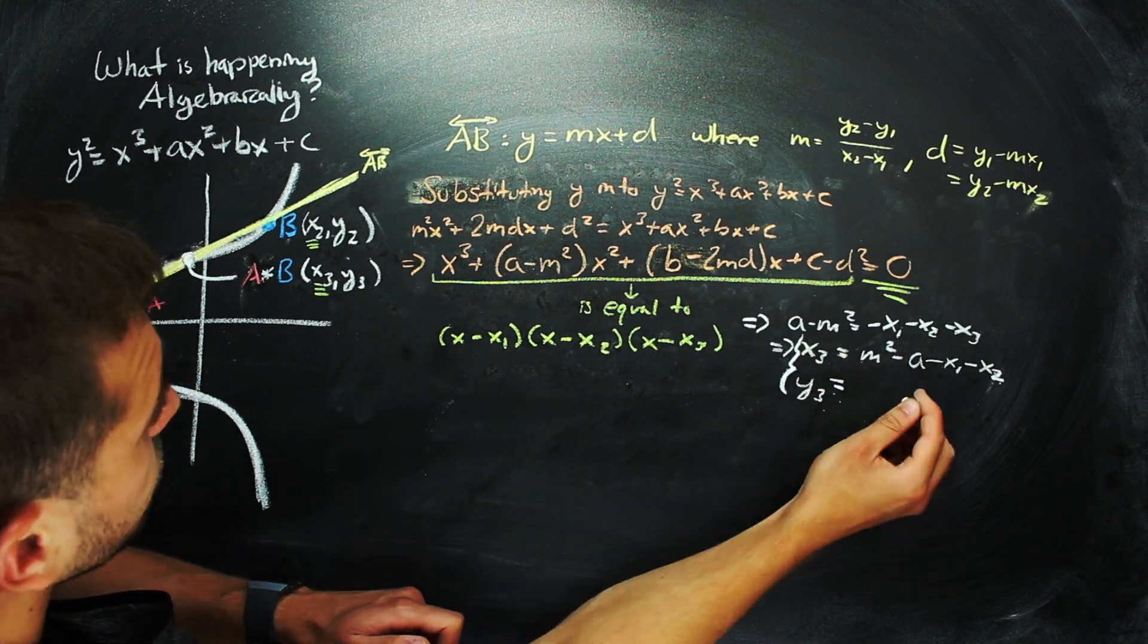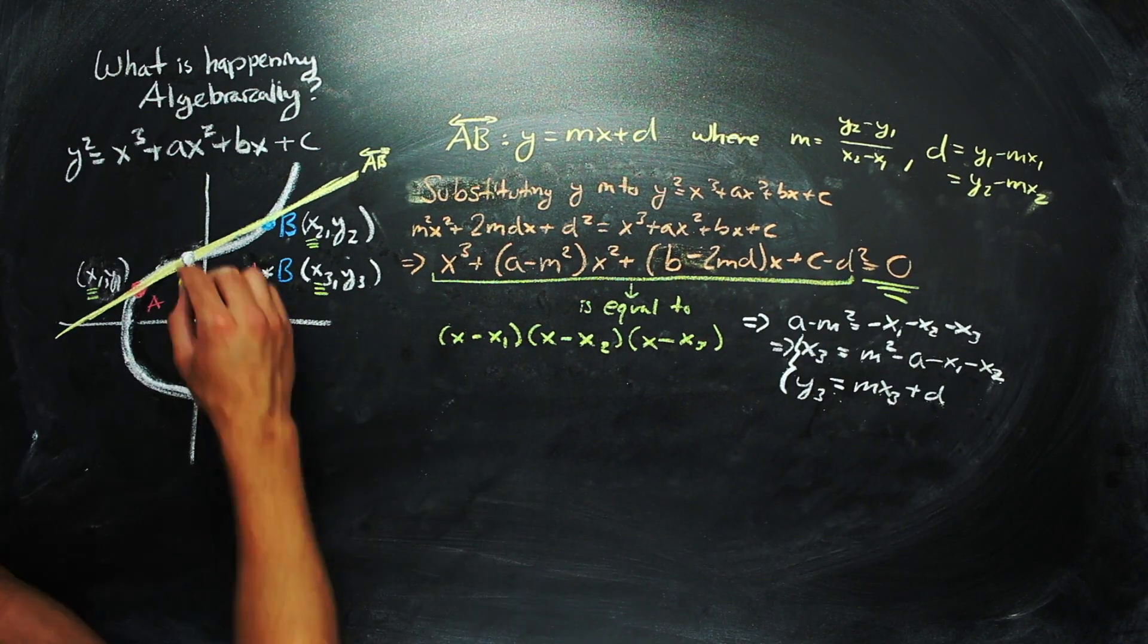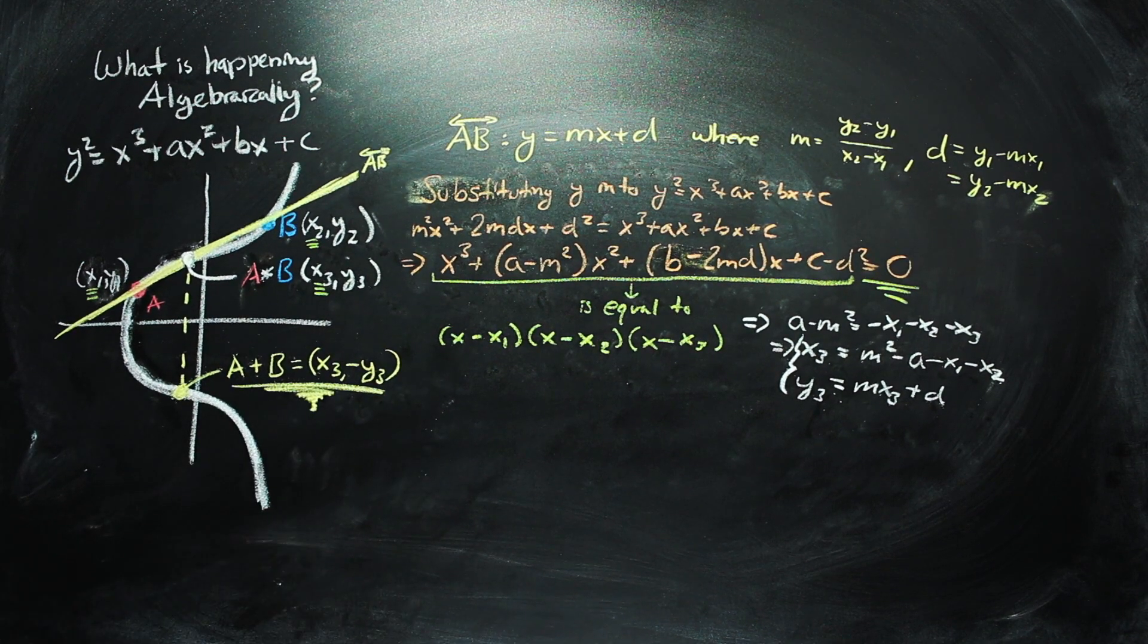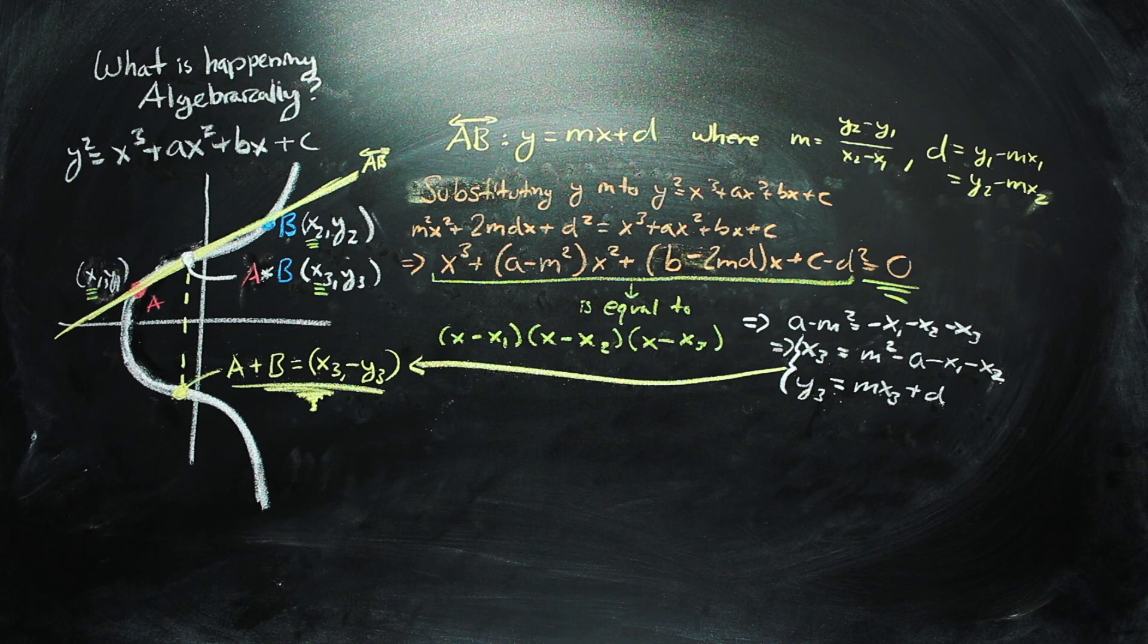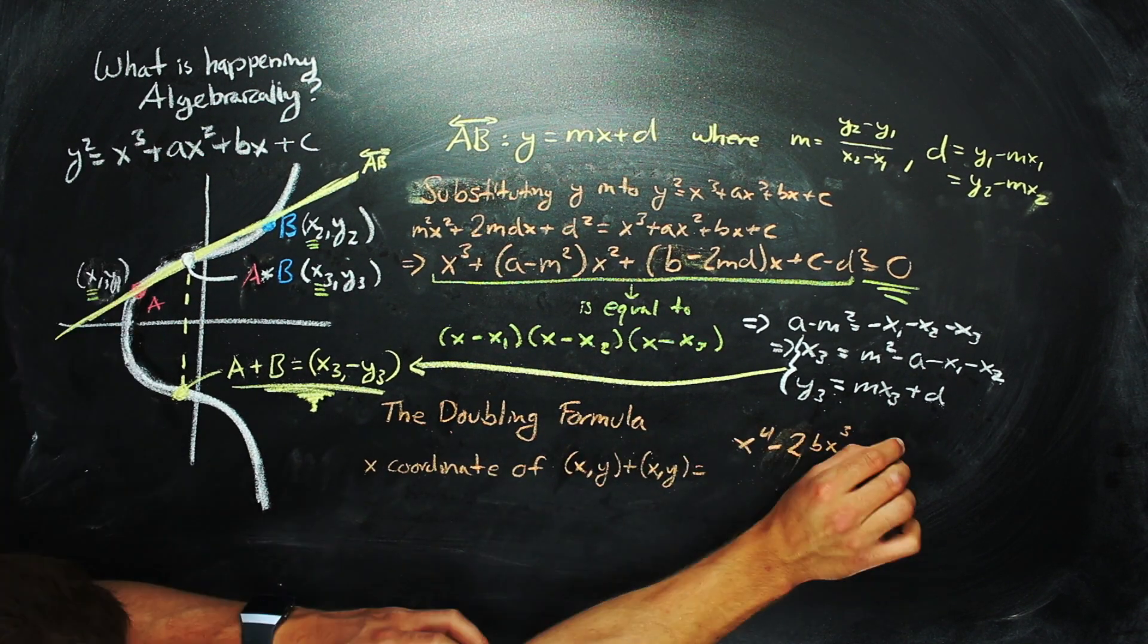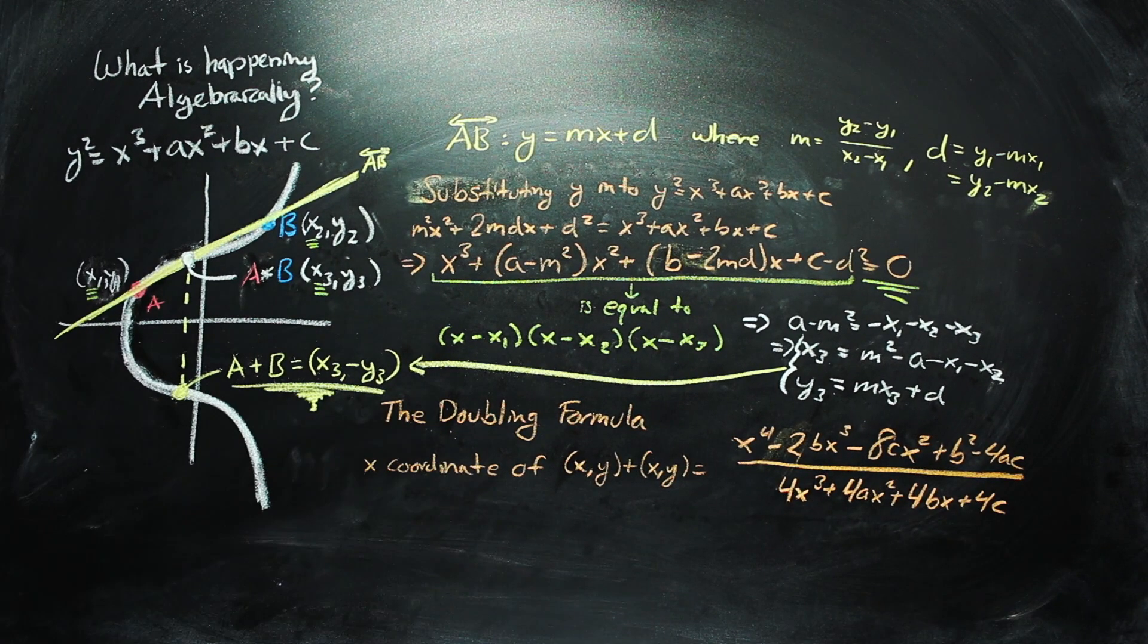If that seemed really involved, it is. It's one of the reasons that elliptic curves are so useful as the algebraic operations are so computationally intensive. To illustrate this more, the doubling formula, which only gives the x-coordinate, is given by the following.